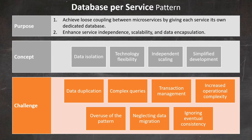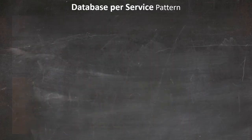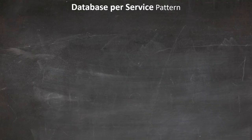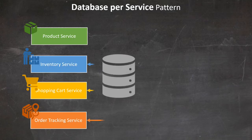Now let's explore how this pattern translates into real-world applications. In the previous video, we adapted a monolithic e-commerce platform into a microservices architecture. Today, we'll build on that foundation by applying the database per service pattern. Our current architecture consists of four main services: the product service, inventory service, shopping cart service, and order tracking service.